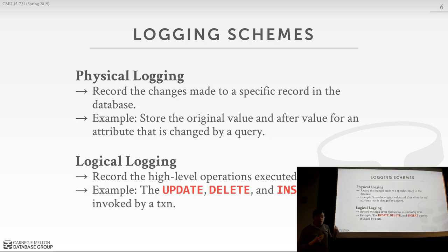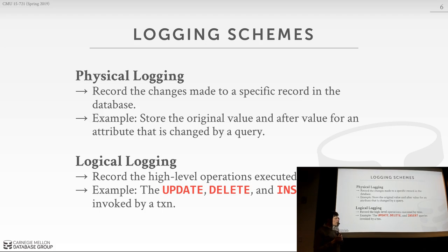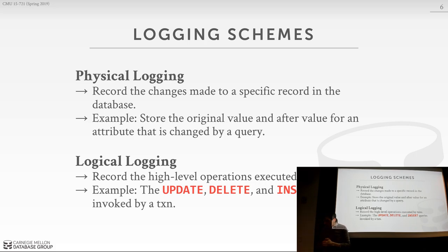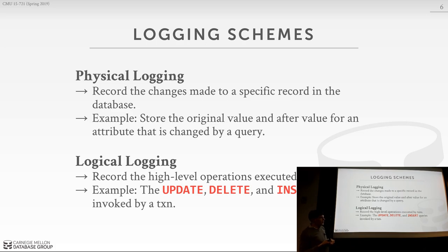There are two high-level classes of logging schemes. The first is called physical logging, where we record in the log the low-level changes that transactions make to individual tuples or bytes of the database. In the SiloR paper they call this value logging — the same idea. For every single transaction that modifies an attribute in a tuple, we record the bits that were written to that new version of the tuple.